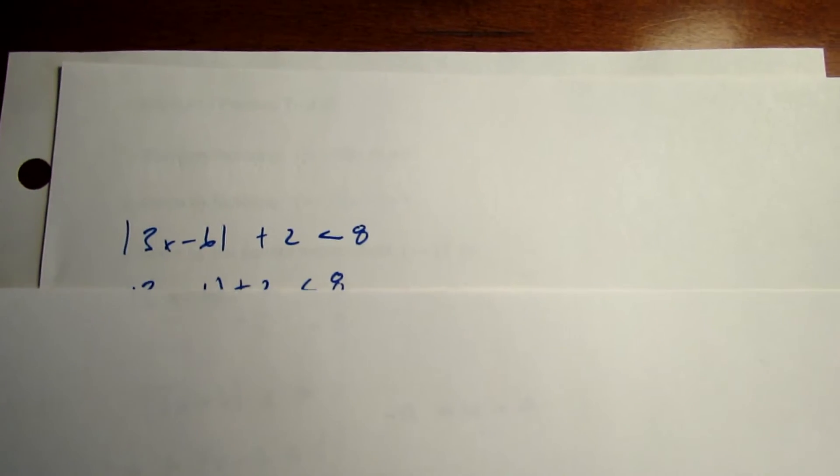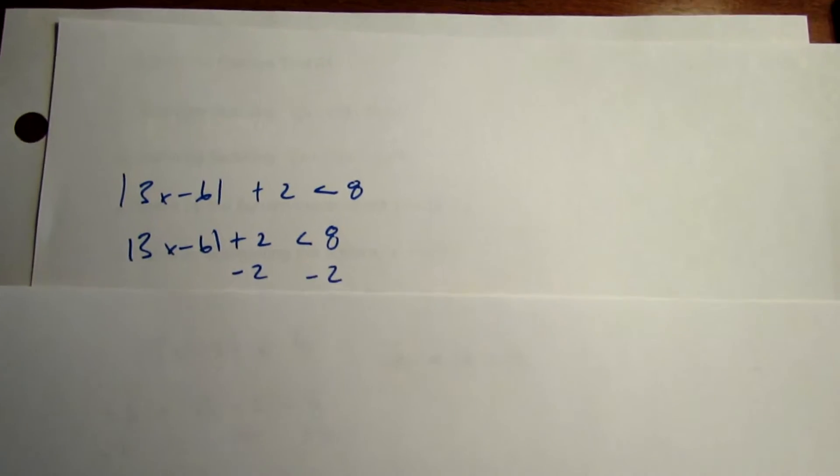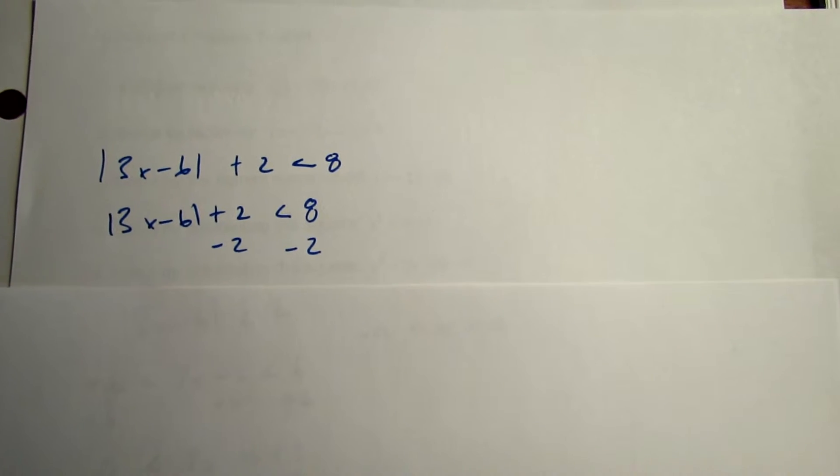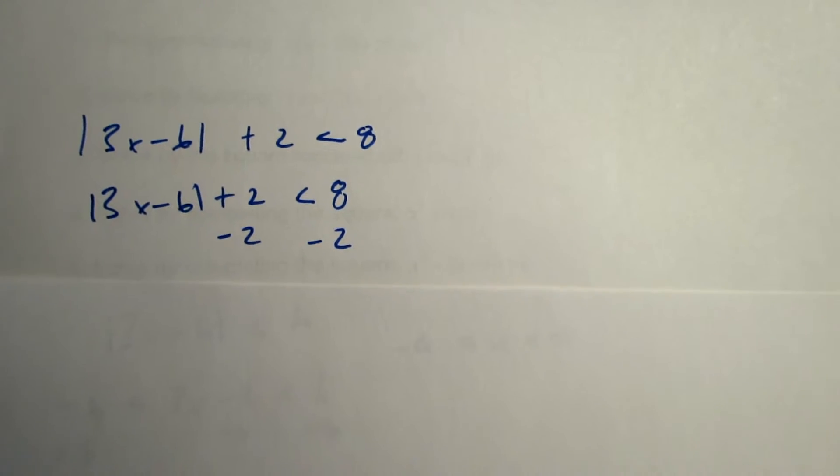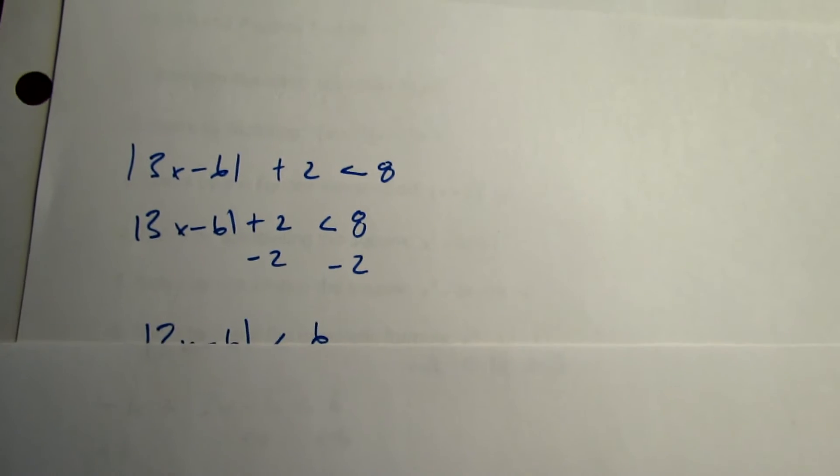Second step, you want to solve the given inequality. First, isolate the absolute value on the left side of the inequality. Subtract 2 from both sides, and you should get absolute value of 3x minus 6 is less than 6.